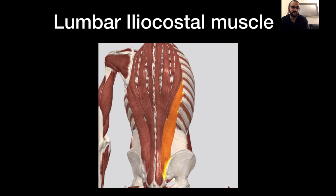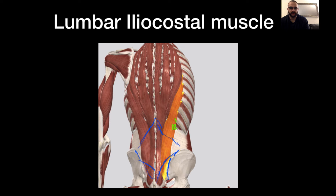The lumbar iliocostalis muscle originates at the iliac crest and also at the thoracolumbar fascia. It inserts at the six lower ribs — ribs 6 through 12. When these muscle fibers contract, they pull the trunk downwards or backwards, and also flex the trunk to the side.